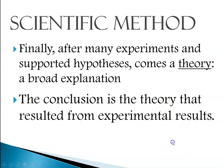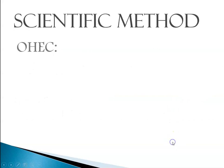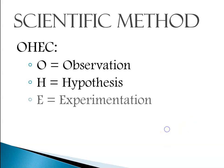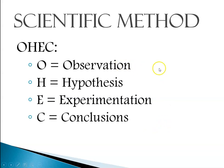The conclusion part of the scientific method is after all of your experimental results are studied, you end up with a theory. A way to remember the scientific method is using the acronym OHEC, where O equals observation, H is hypothesis, E is experimentation, and C is conclusions.